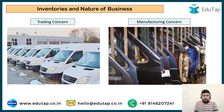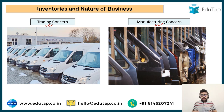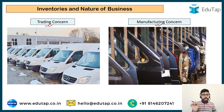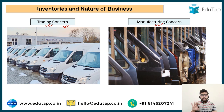There can be different natures of business. A manufacturing concern does manufacturing — they get raw material, process it, and make the finished product. For example, a car manufacturing company like Maruti takes raw materials such as steel and builds a car from scratch. From the dealership perspective, it is simply a trading concern — it gets a ready-made car and resells it to the customer.